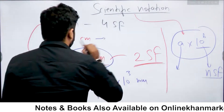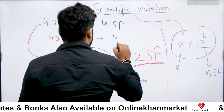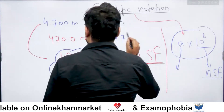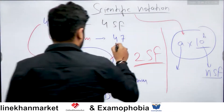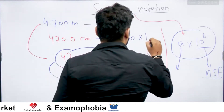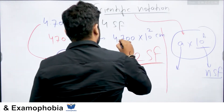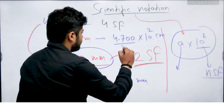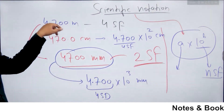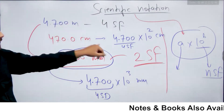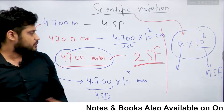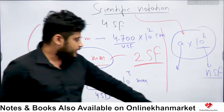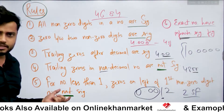Isi tariqe se is value ko hum likh sakte hain as 4.700 into 10 to the power 2 centimeters — again here 4 significant digits. And similarly 4.700 into 10 to the power 1 — number of significant figures are 4. So scientific notation ka hum use karte hain kabhi-kabhi jab is tarah ki ambiguity saamne aa sakti hai. Lekin agar aisi ambiguity nahi hai to hum apne normal rules ka hi use karenge jinko hum discuss kar chuke hain.